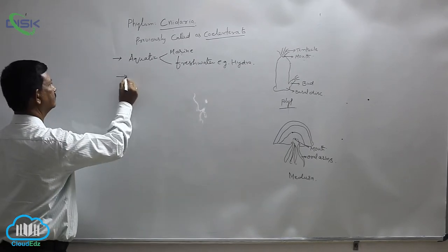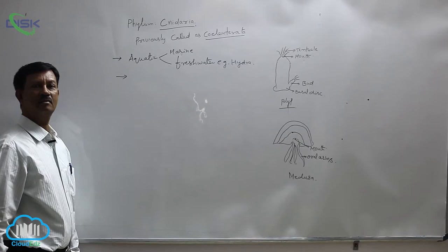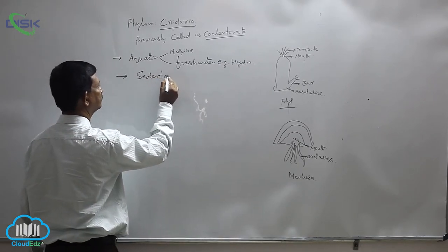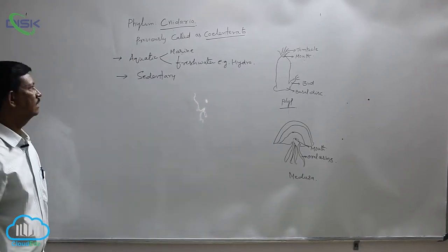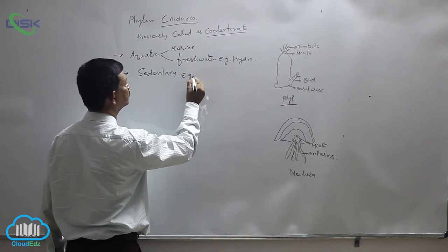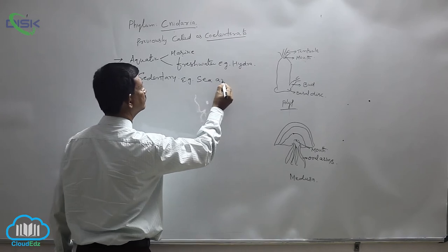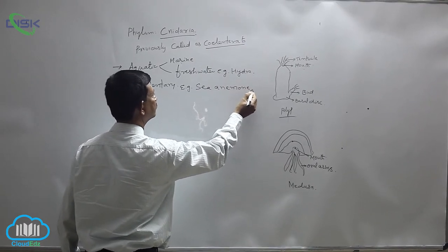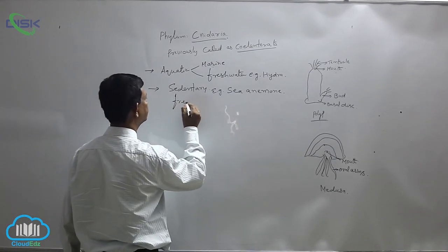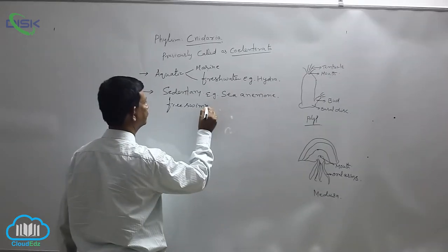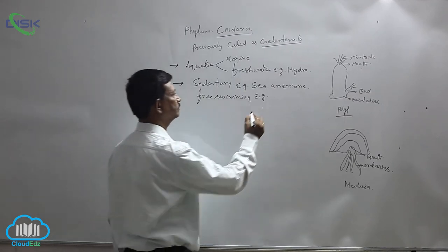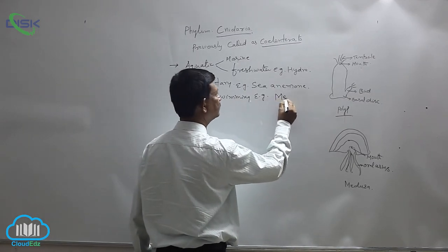They are sedentary or free swimming. Sedentary examples include Hydra and sea anemones. Free swimming examples include Medusa, which swim freely in the water.